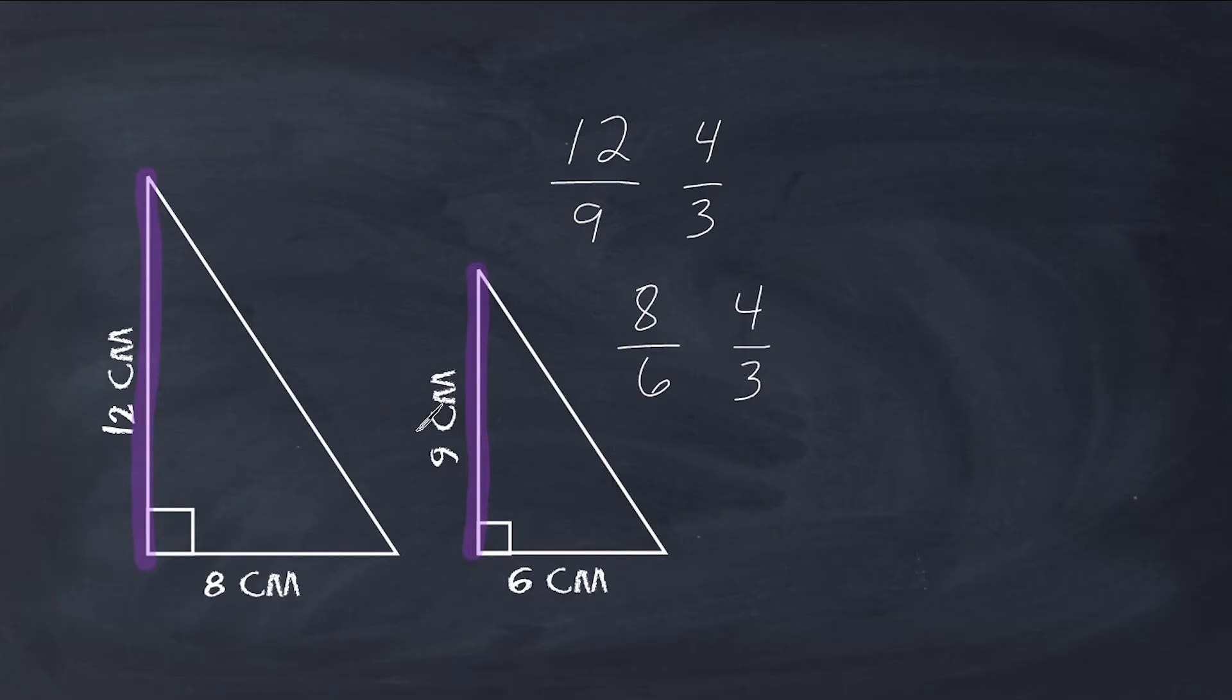Another way that we can do this is we could have just set up a proportion. We could have taken this height, which is 12, and we can compare it to this height, which is 9. And we want to see if it is equal to the base, which is 8, compared to this base, which is 6. And we can quickly cross-multiply.